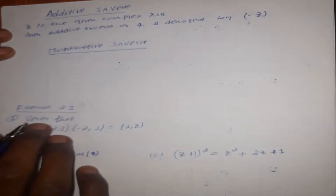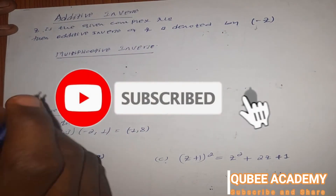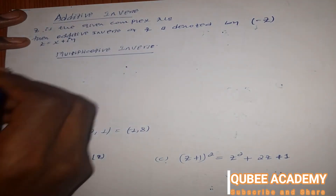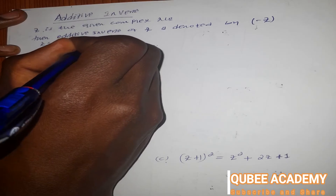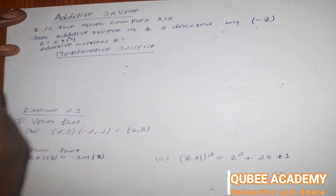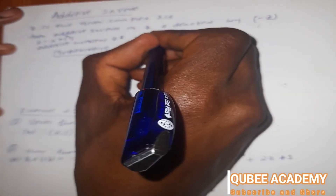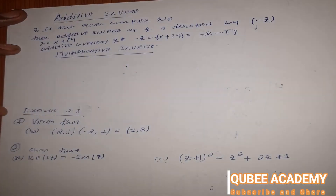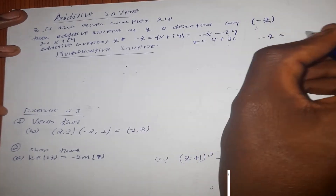The additive inverse of the given complex number z is the negative of z. Let's say z is equal to x plus i times y. Then the additive inverse of z — that is, negative z — is equal to negative x minus i times y. For example, if z is equal to four plus three i, then negative z is equal to negative four minus three i.